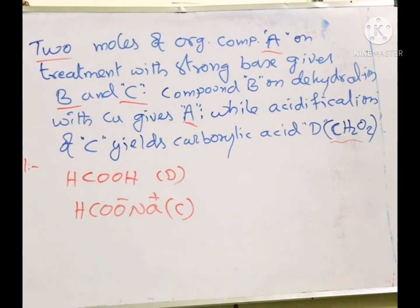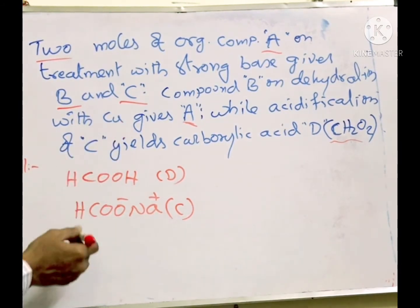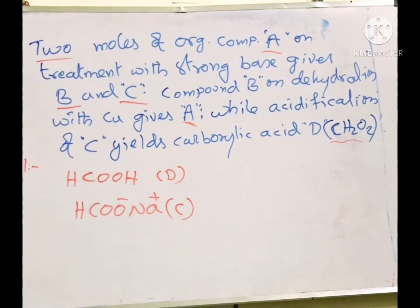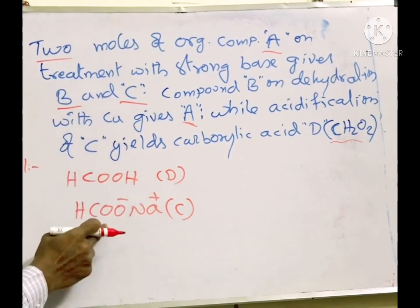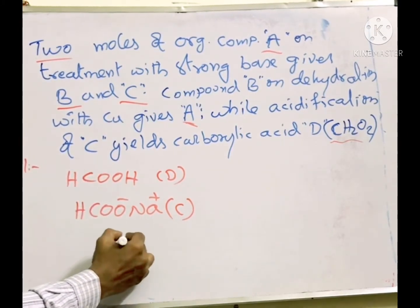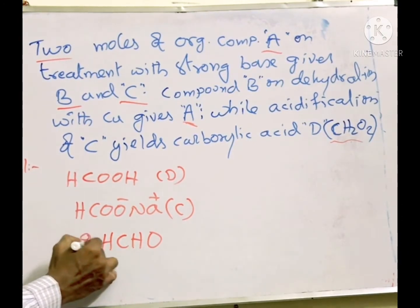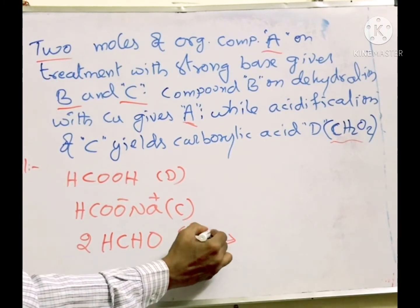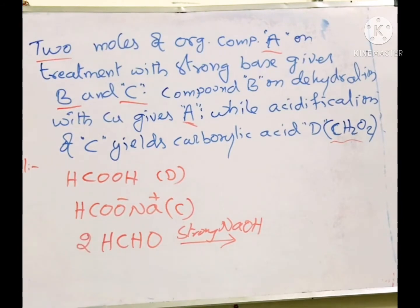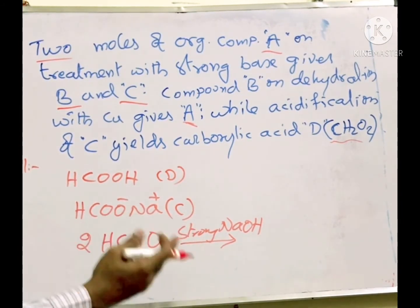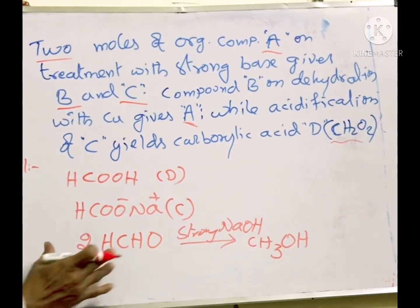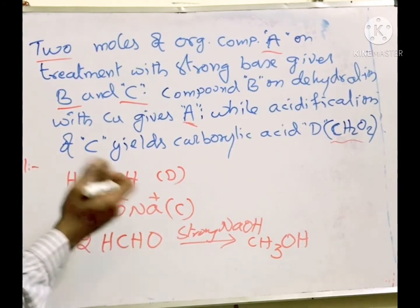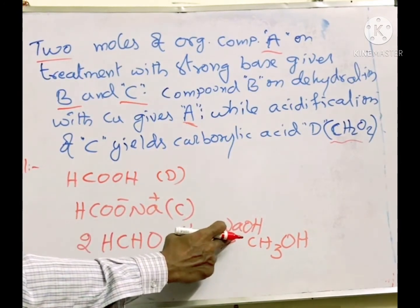Sodium formate is the salt of formic acid. Now you add H+, then H will replace Na and it becomes formic acid. So C is sodium formate. Now compound B on dehydration with copper gives A. This is the Cannizzaro reaction. Two moles of A with NaOH — one mole will oxidize, one mole will reduce. Reduced gives methanol CH3OH. Oxidized gives formic acid, but with NaOH present you get sodium formate.